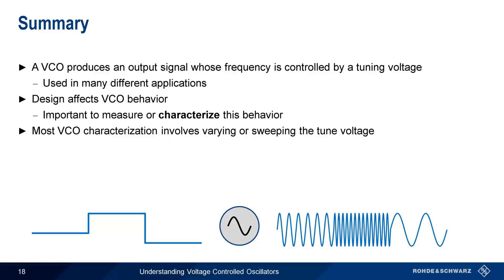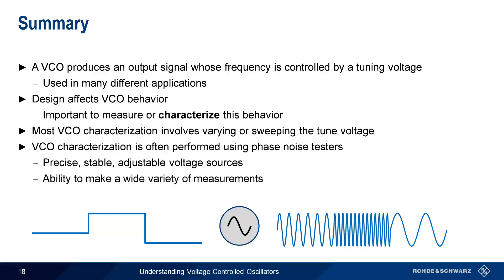Because VCOs are a type of oscillator, VCO characterization is often performed using phase noise testers. VCO characterization requires precise voltage sources, which can be adjusted while simultaneously measuring the VCO output. But the ability to make other measurements, such as phase noise, settling time, or spurious emissions, are also useful in characterizing VCOs.